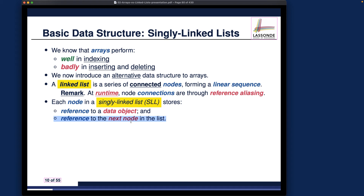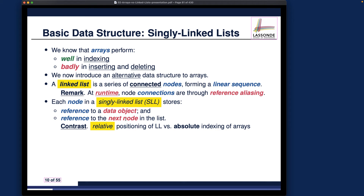I'll draw a diagram very soon, but first contrast the two structures. Whenever you talk about linked lists, one characteristic feature is relative positioning — if you want to go to index 5, which is the sixth element in the list, it would be a linear time operation. But for array indexing, it's constant time. That's one key aspect where these two basic data structures differ in performance.